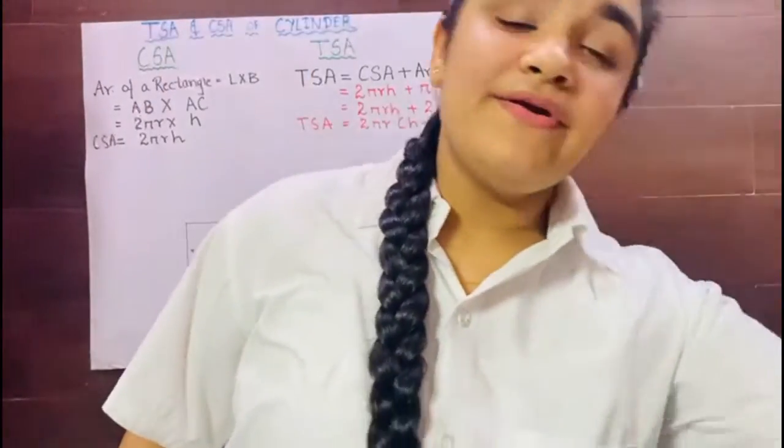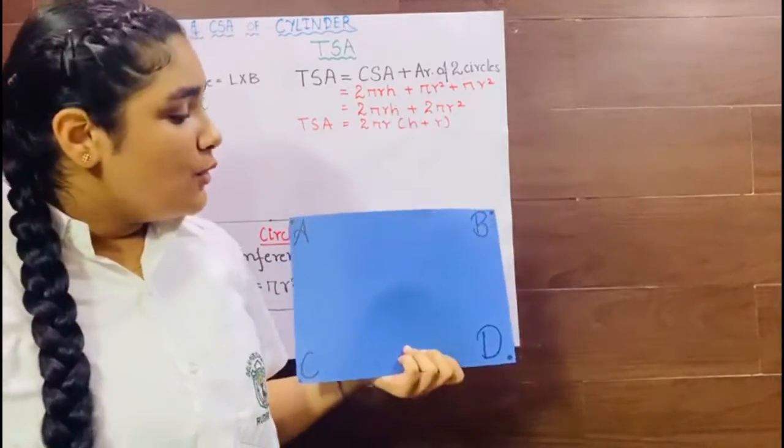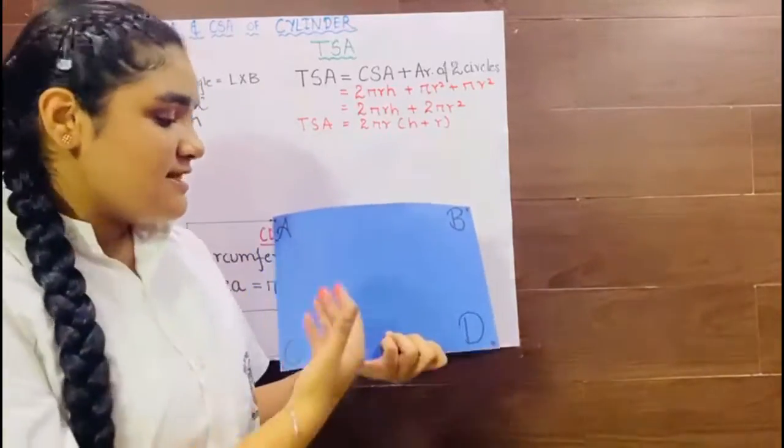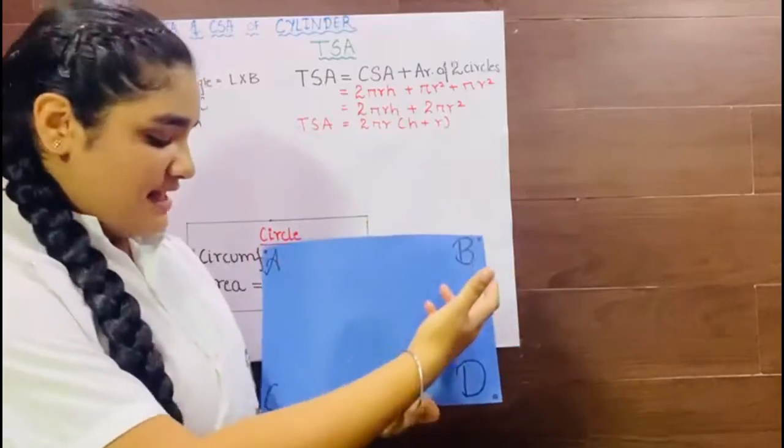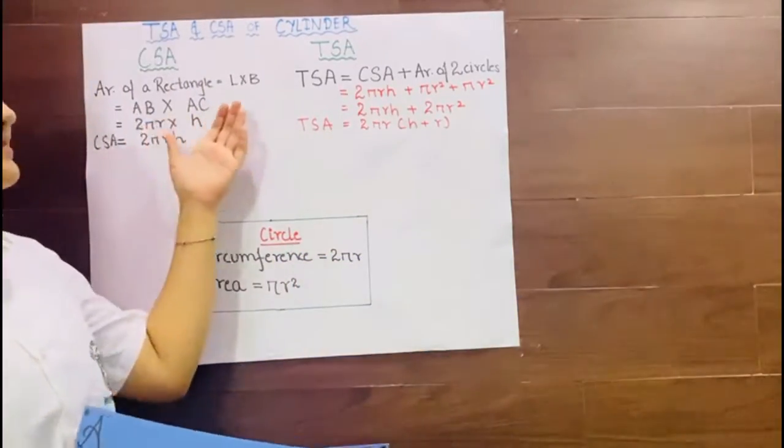For this I require a rectangle. Here in front of you is a rectangle with vertices A, B, C and D. AB is the length and AC is the breadth. We know area of rectangle is length into breadth.